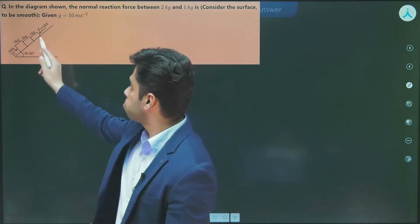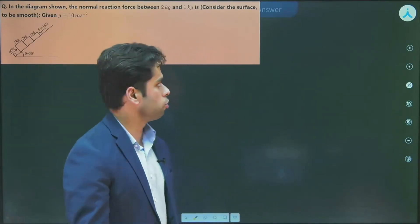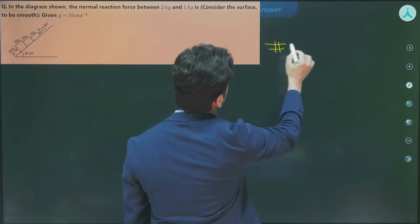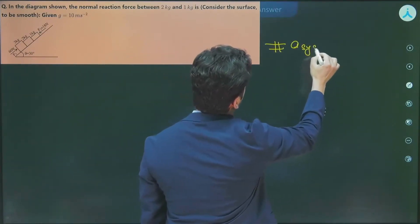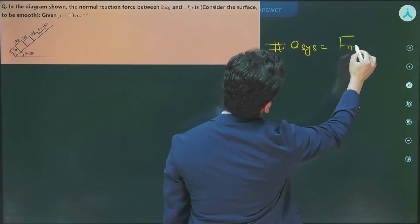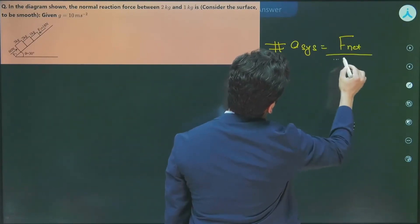So this time you need to calculate the normal reaction force between 2 kg and 1 kg. We'll use a simple concept: acceleration of system is equal to F net by total mass.